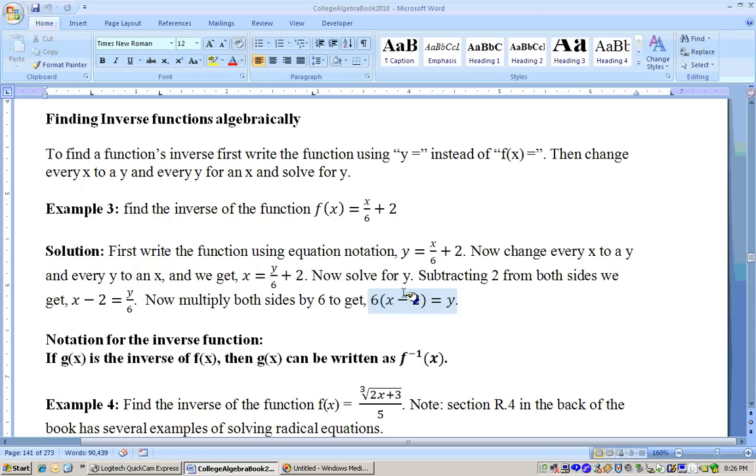Now we've got to solve this for y. So the first thing you may do is subtract 2 from both sides to get x - 2 = y/6. And then to get rid of the divide by 6, you multiply both sides by 6 to get y = 6(x - 2). Now that would be the inverse function right there.